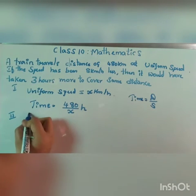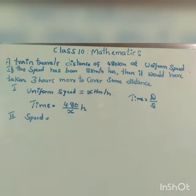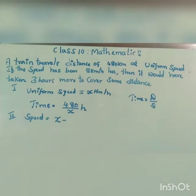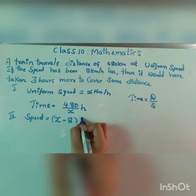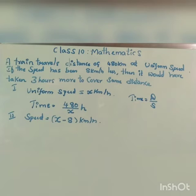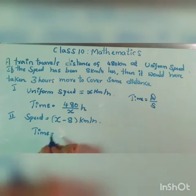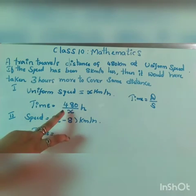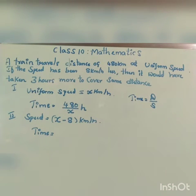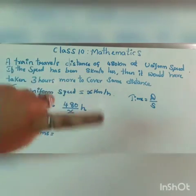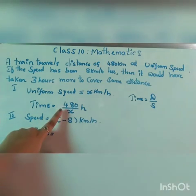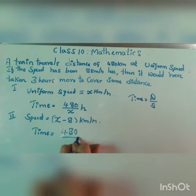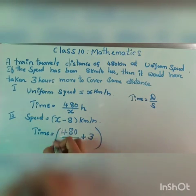For the second case, we take what happens to the speed: if the speed has been 8 km less, it becomes x minus 8 km per hour. The time for this case — since it would have taken 3 hours more — becomes 480 divided by x, plus 3 hours.